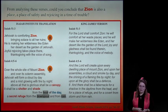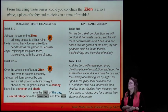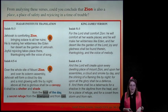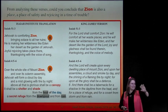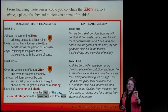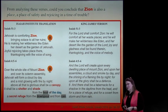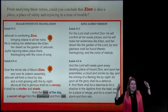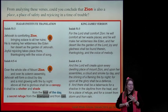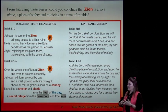Isaiah chapter 4: 'Over the whole site of Mount Zion and over its solemn assembly, Jehovah will form a cloud by day and a pillar of fire by night'—quoting the Exodus when they came out of Egypt—'in a mist glowing with fire by night. Above all that is glorious shall be a canopy'—that canopy is important—'and it shall be a shelter and a shade from the heat of the day and a secret refuge from the downpour and from the rain.'